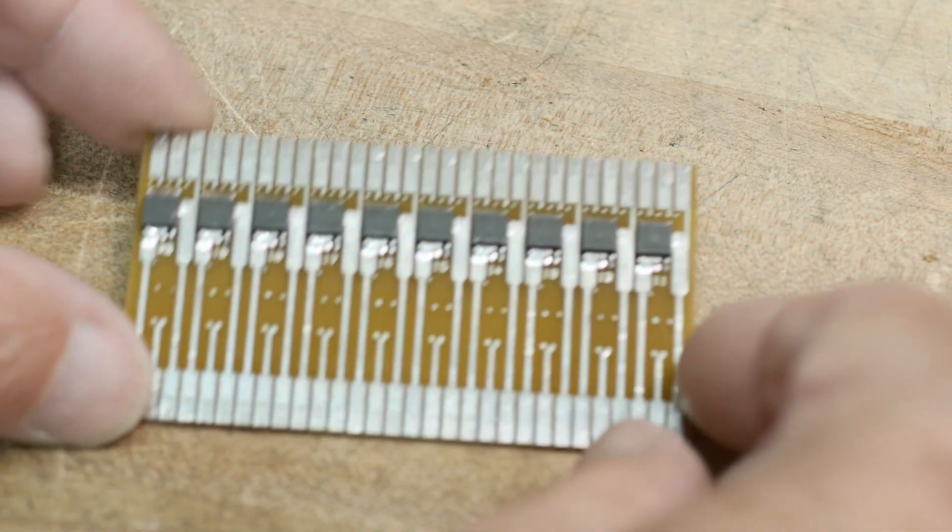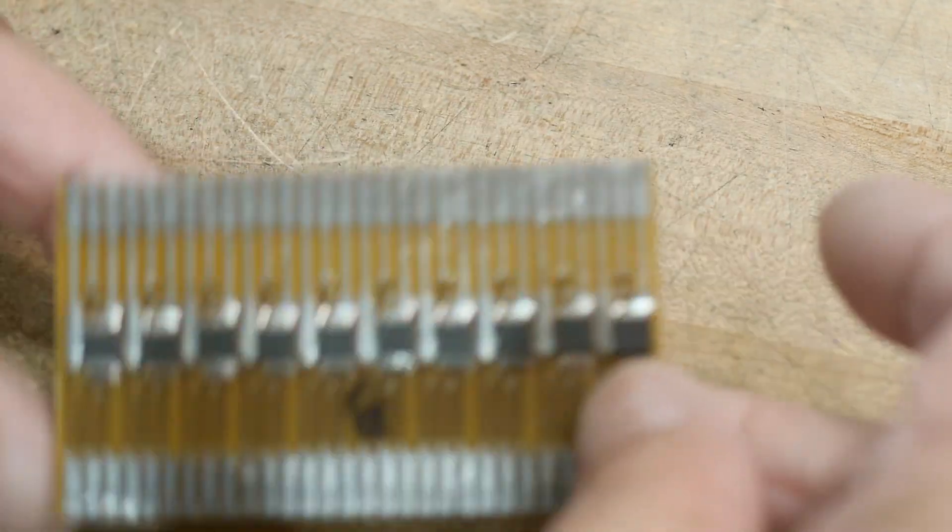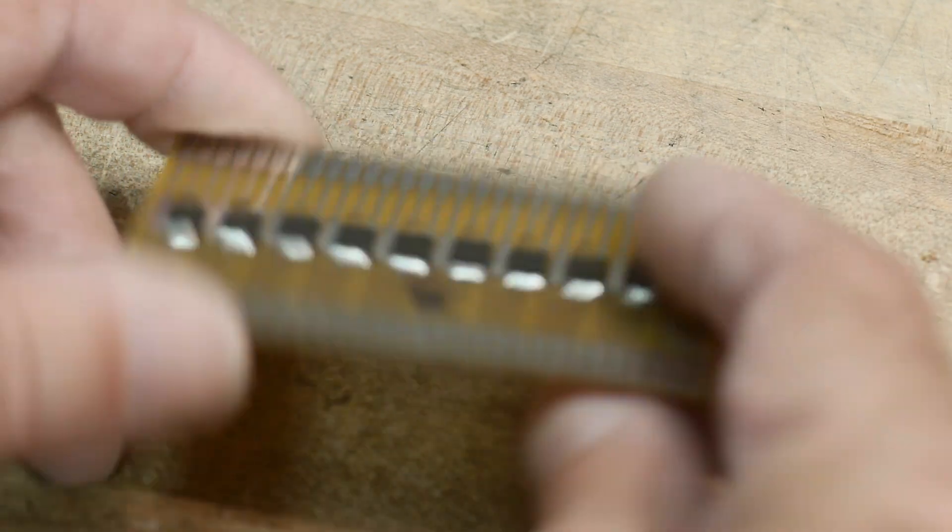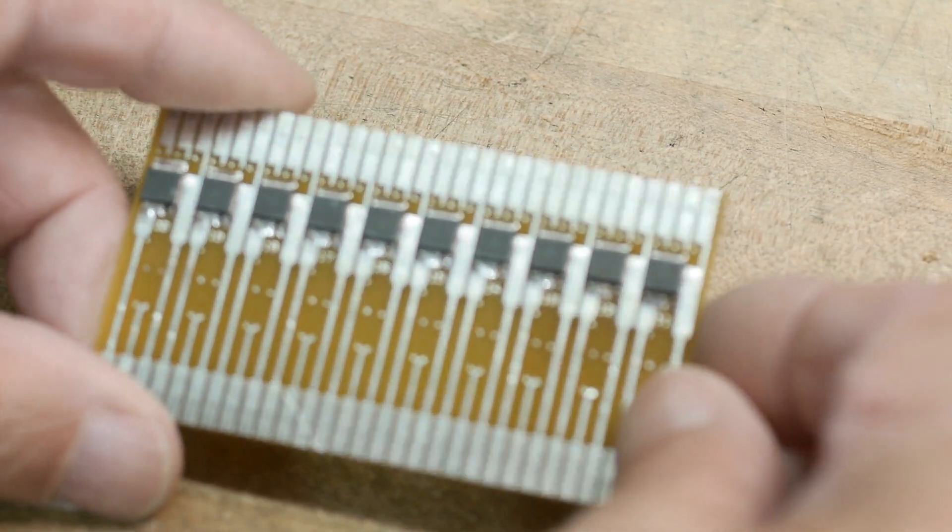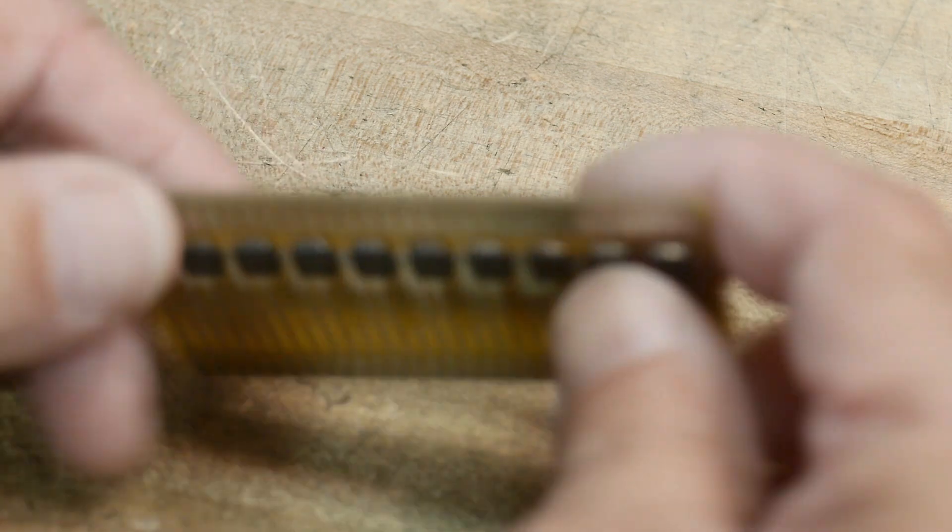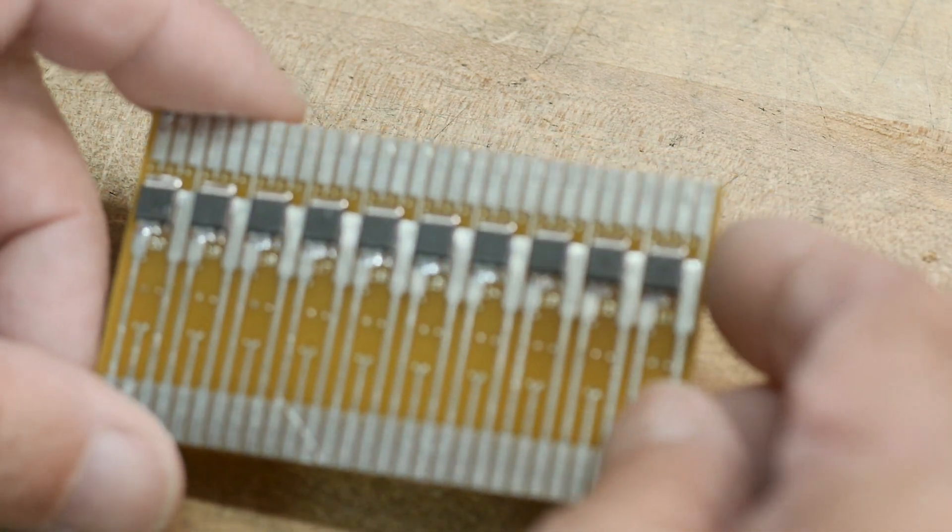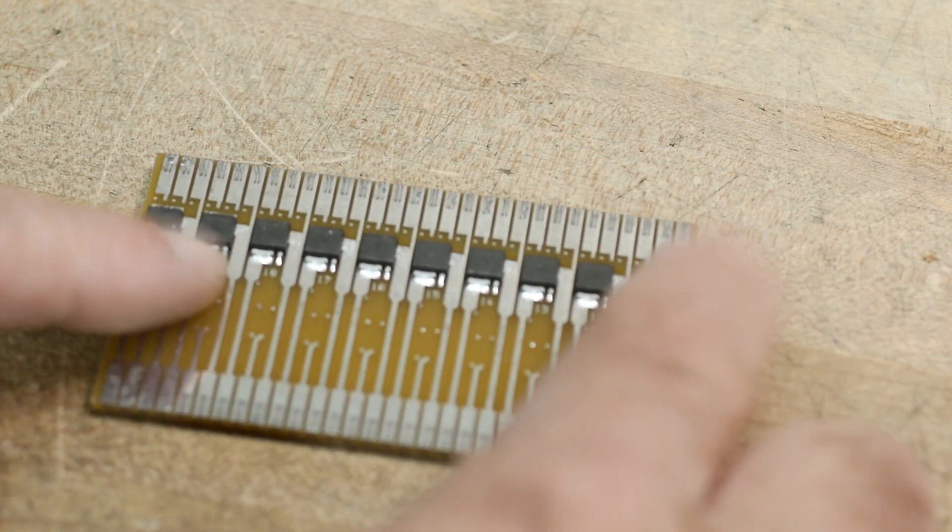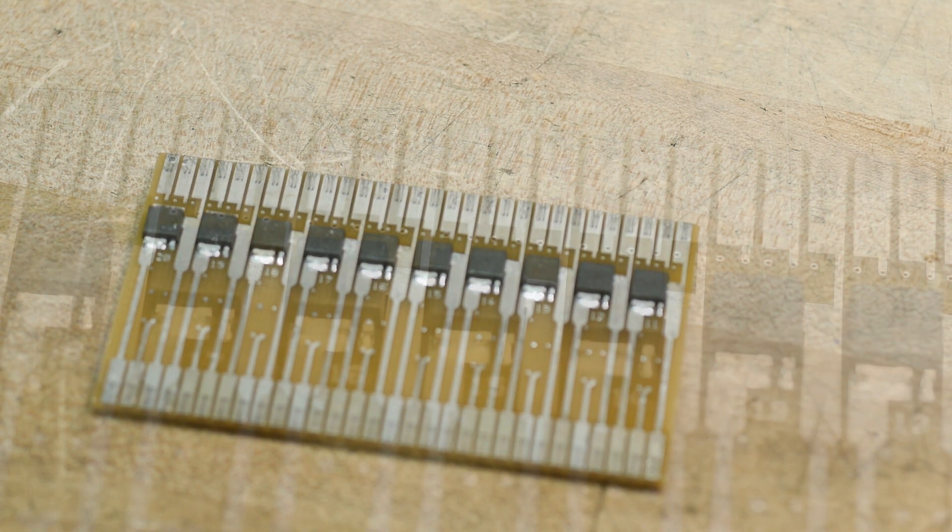So I found this at the store the other day and wasn't quite sure what it was. It has components on the front and the back, and at first I thought maybe they were resistors and it was a load board or something. But let's zoom in close and I'll show you what's going on here. They seem to be maybe active devices.